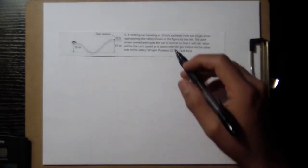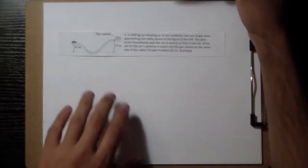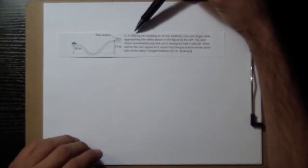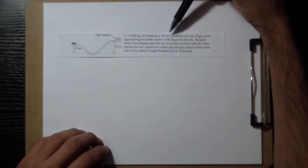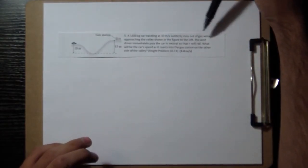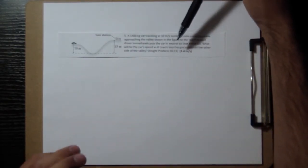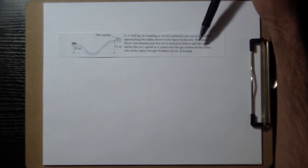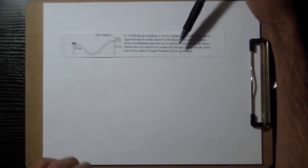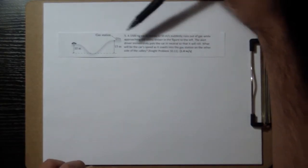Okay, let's look at problem number five. I'll read it to you. A 1500 kilogram car traveling at 10 meters per second suddenly runs out of gas while approaching the valley shown in the figure to the left. The alert driver immediately puts the car in neutral so that it will roll. What will be the car's speed as it coasts into the gas station on the other side of the valley?